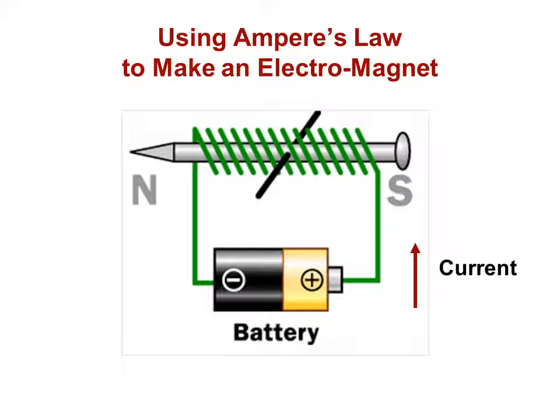You can use Ampere's law to make an electromagnet, just with DC. It doesn't have to be a varying current. You can run a DC current through a coil of wires wrapped around a nail and it will create a magnet. Now, this is harder to do with an aluminum nail. I would suggest you use one that's made of steel.